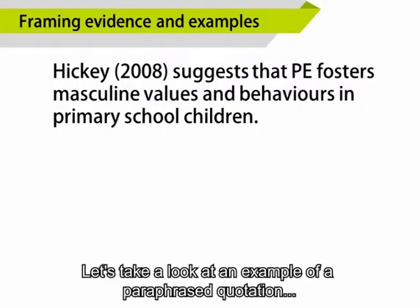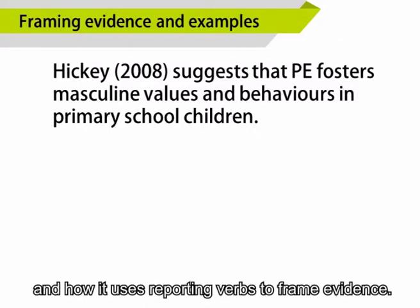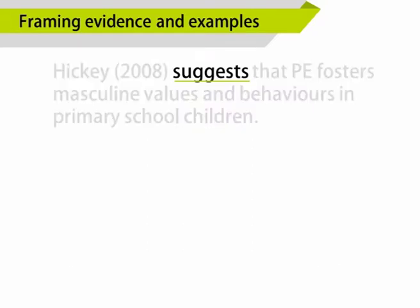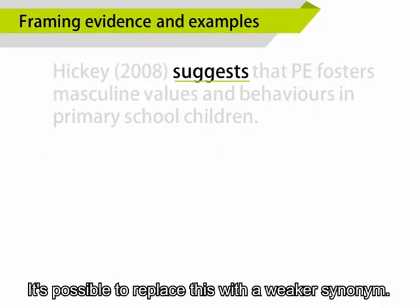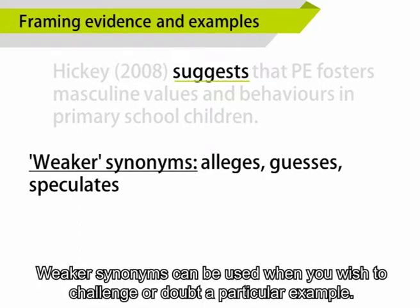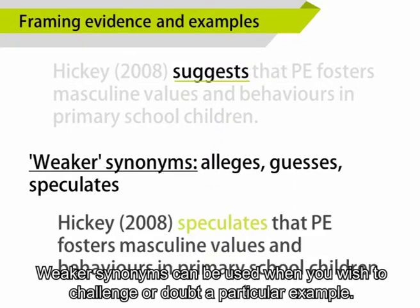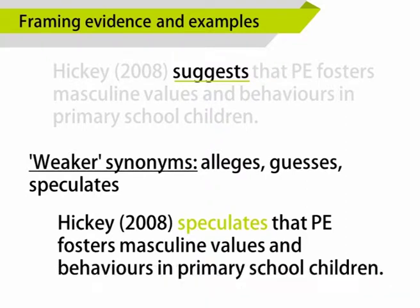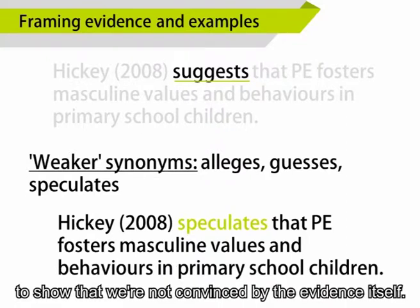Let's take a look at an example of a paraphrased quotation and how it uses reporting verbs to frame evidence. As you can see from this example, the term 'suggests' is what we might describe as a fairly neutral verb. It's possible to replace this with a weaker synonym. Weaker synonyms can be used when you wish to challenge or doubt a particular example — in this case, we might replace 'suggests' with terms like 'alleges', 'guesses', or 'speculate', to show that we are not convinced by the evidence itself.